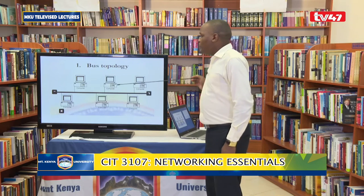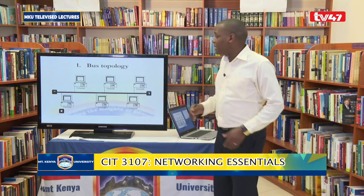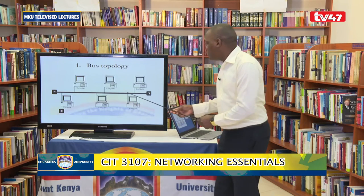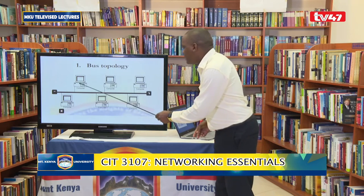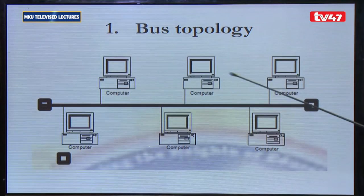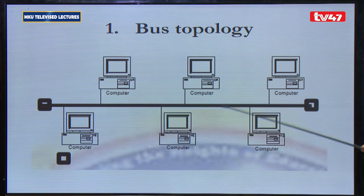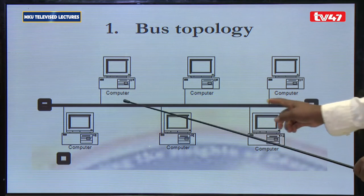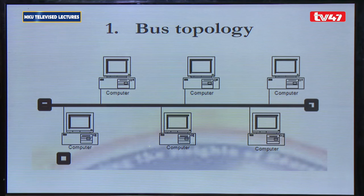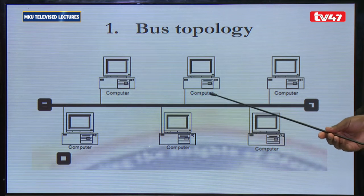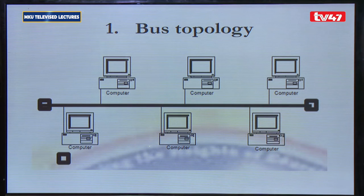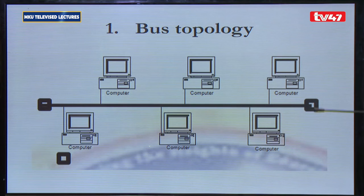Therefore, only one computer can transmit at a time. If two computers happen to transmit at the same time — for example, computer 1 is sending to computer 6 and computer 3 is also transmitting — those data packets will meet along the transmission path and collide. The data packets will be destroyed such that the message will not get to the intended recipients, and therefore the transmitting computers will have to retransmit again. Collision of data affects the transmission.